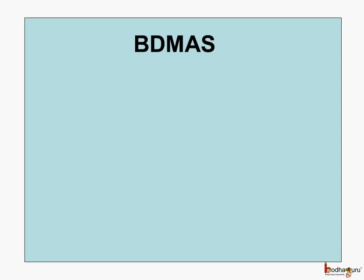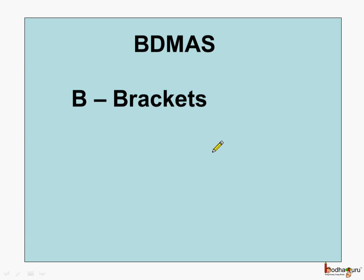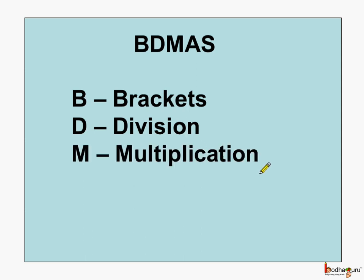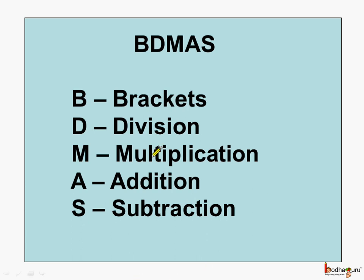First, B stands for brackets, and the operation which is under the brackets should be solved first. Next, division should be solved, followed by multiplication, then addition, and lastly subtraction. So this is BDMAS rule.